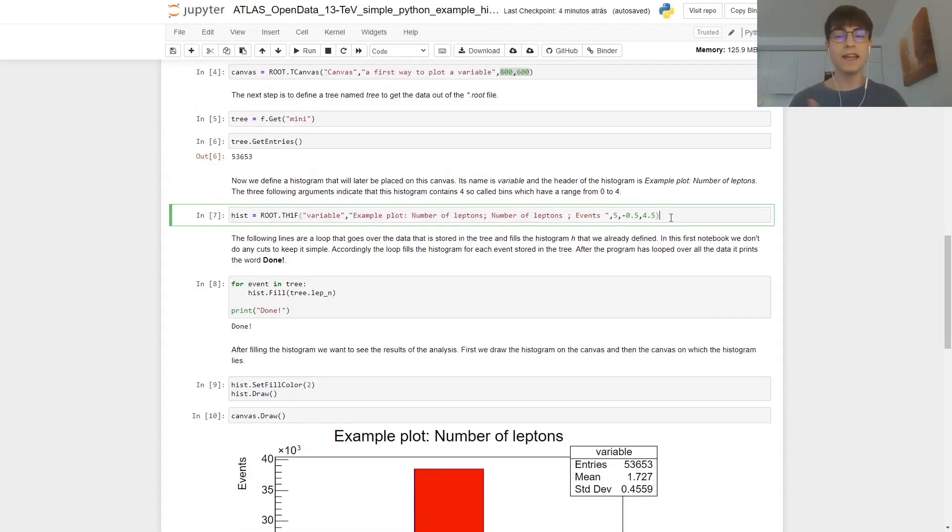Now we will define a histogram. So again, we declare a variable, inside the ROOT library, we do .TH1F, the identity name of our histogram, the title, which will be written at the top of the chart, the number of bins we want, and the upper and lower boundary of our x-axis.